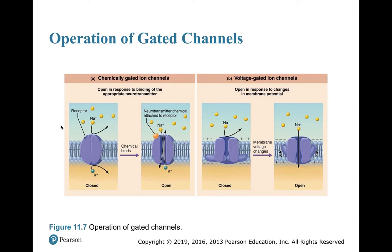In a chemically gated channel, it's normally closed with no ligand bound. When a neuron releases a neurotransmitter, that neurotransmitter binds to the lock and opens the gate, allowing sodium and potassium to pass through. In voltage-gated channels, as long as the voltage is at the resting membrane potential the channel is closed — if you change that resting membrane potential, that opens the channel.